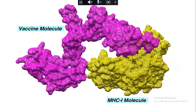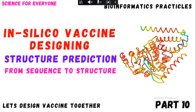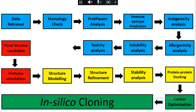Let me give you a brief introduction and quick recap. In the previous videos, I have shown you how to retrieve the data, how to perform homology checks, ProtParam analysis, immunotope prediction, and antigenicity analysis. All of this is the entire pipeline of in silico vaccine designing.